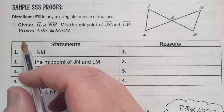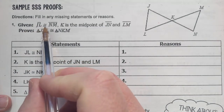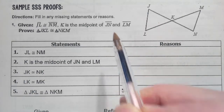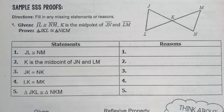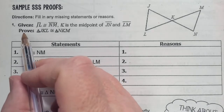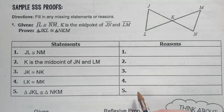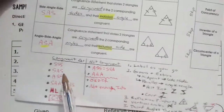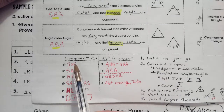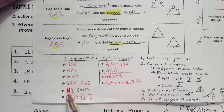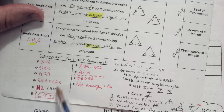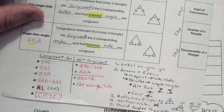Let's just read this. Given: JL is congruent to NM, and K is the midpoint of JN and LM. We need to prove that these two triangles are congruent. So your proof is going to be the last thing, and the reason will never, ever be 'proof' — that will never be a reason. When triangles are congruent, the only way to prove the triangles are congruent will be one of these: SSS, SAS — that's the only way. You put anything else, you're just being silly.